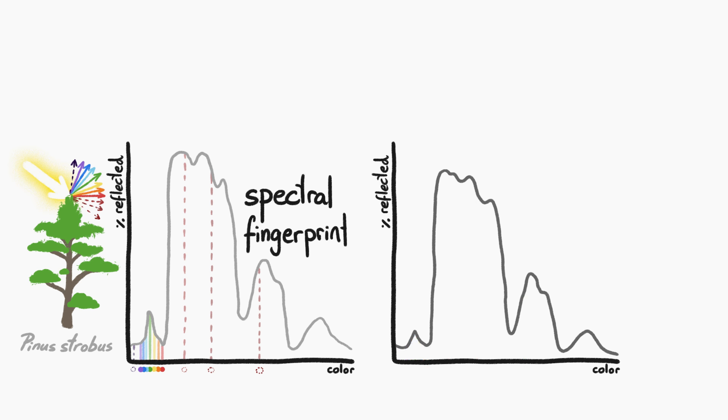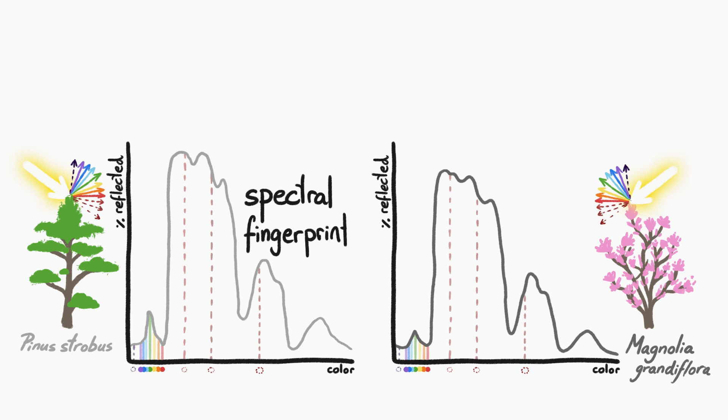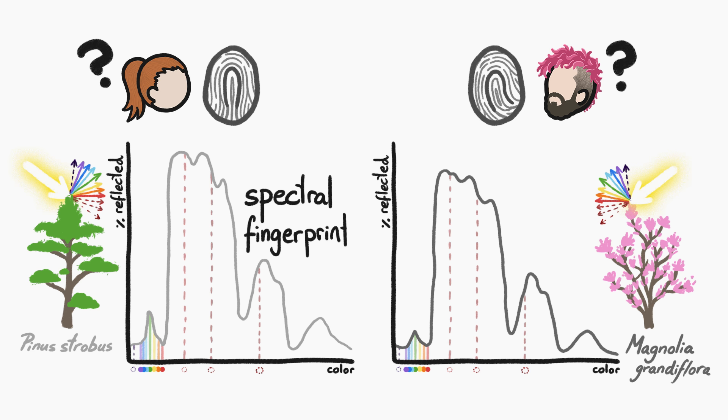Let's compare that to the snapshot for a different tree species nearby, say, a magnolia. At first glance, the spectral fingerprints of the two species look similar, just like the actual fingerprints of two people.